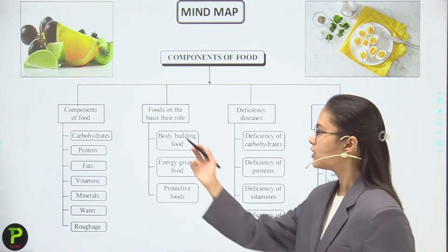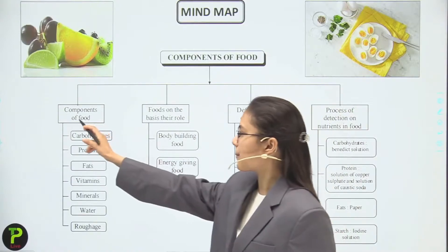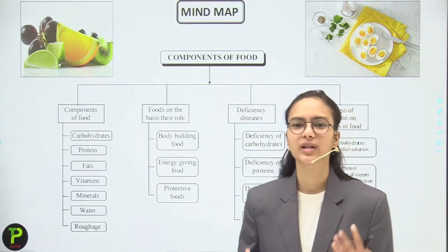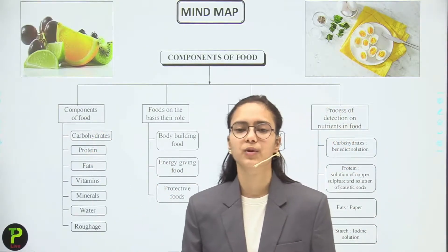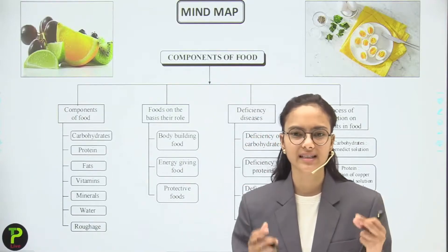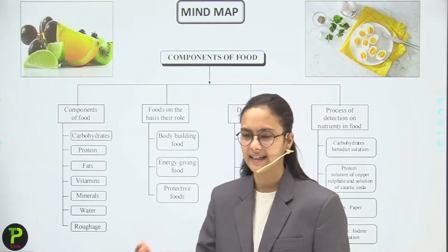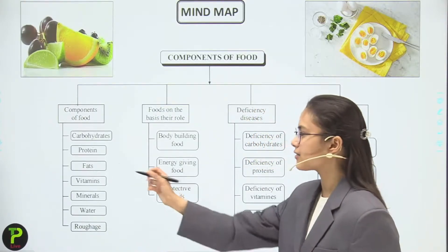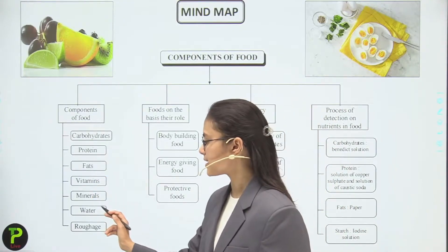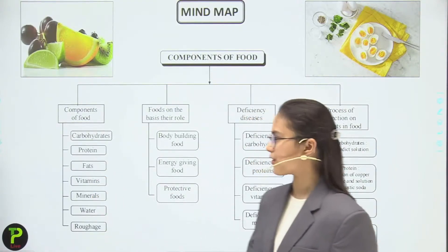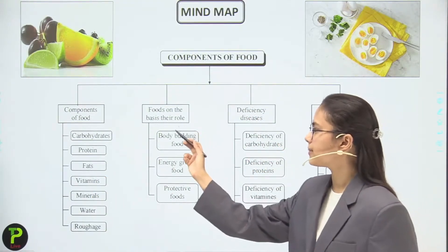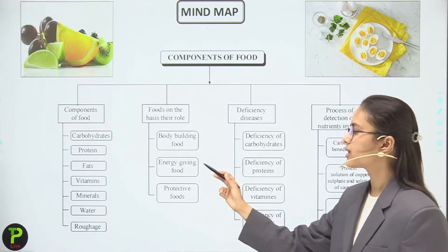The components of food — which we briefly discussed in the earlier chapter — are: carbohydrates, proteins, fats, vitamins, minerals, water, and roughage. Food can also be classified on the basis of its role: body-building food, energy-giving food, and protective food.